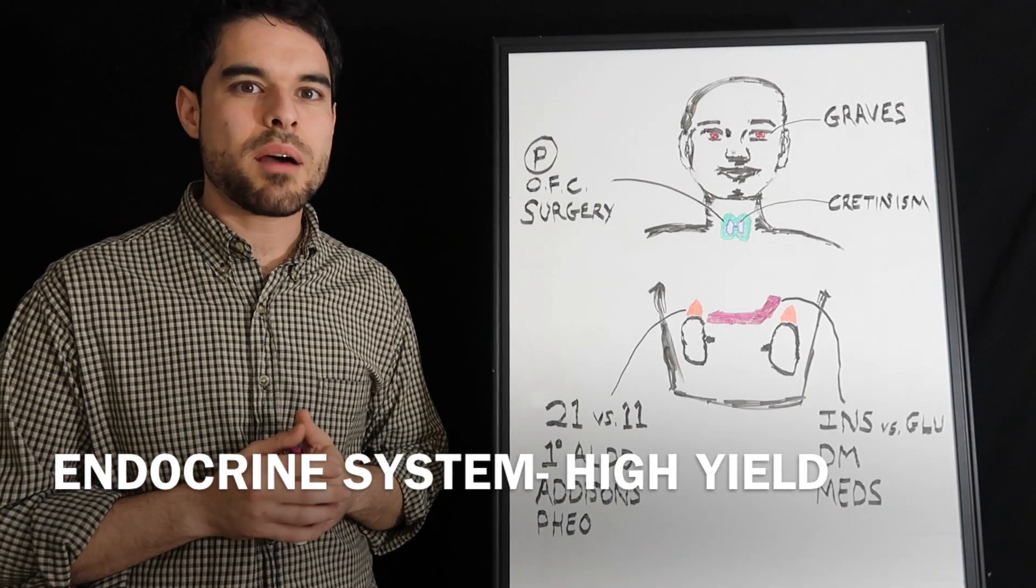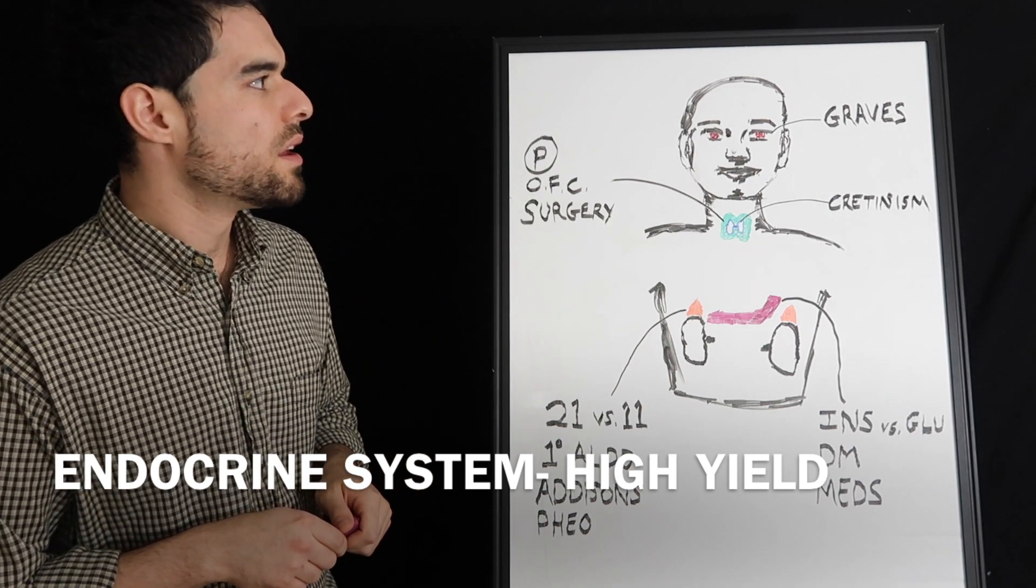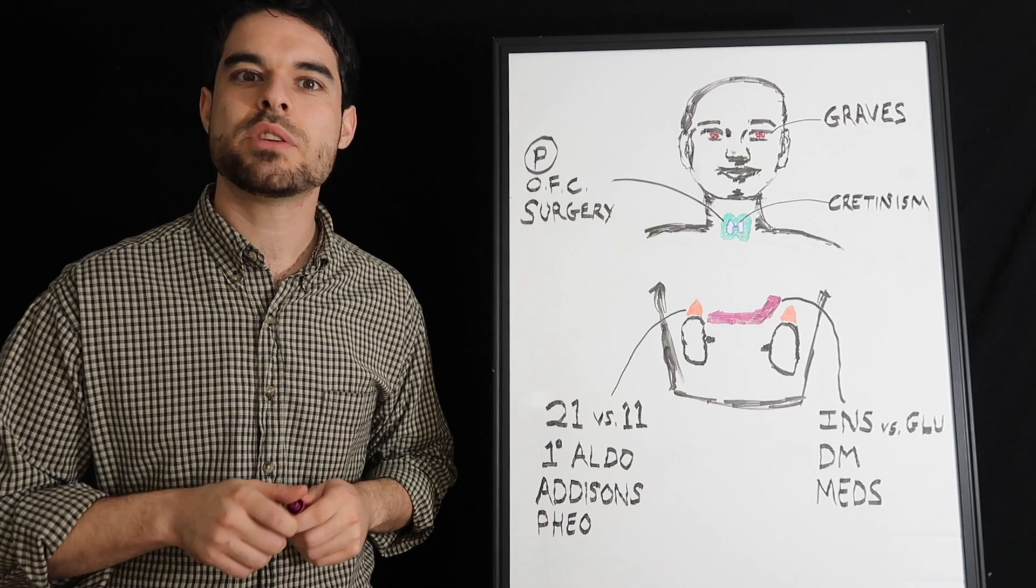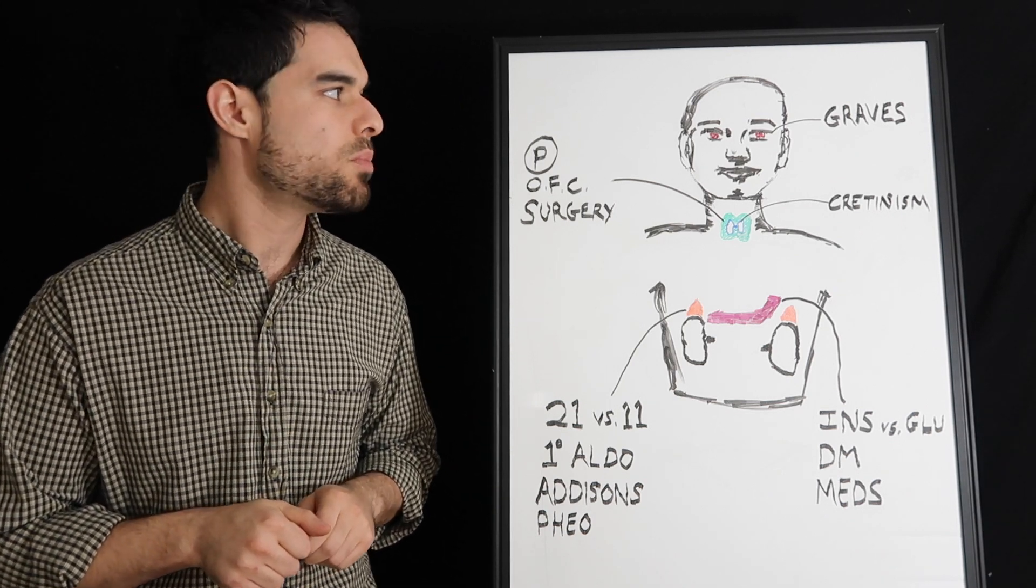This is going to be a review on the most commonly questioned topics on the endocrine system. Starting with the eyes, it's very important to know that the eye problems you see with Graves disease are because of inflammation and that steroids can help with that.